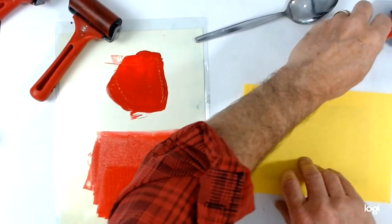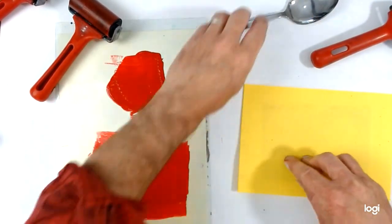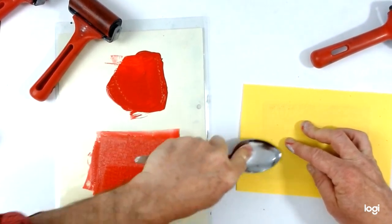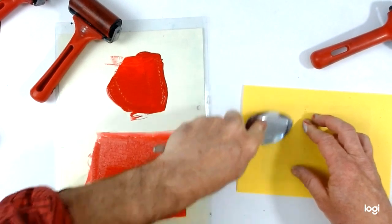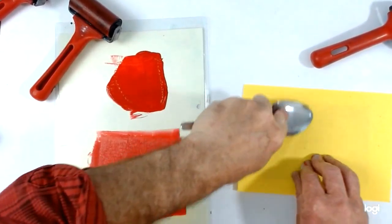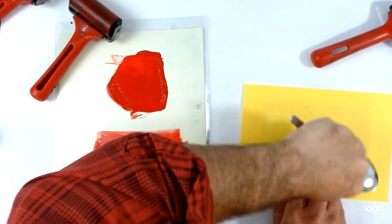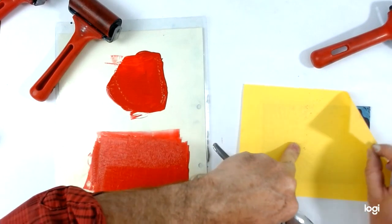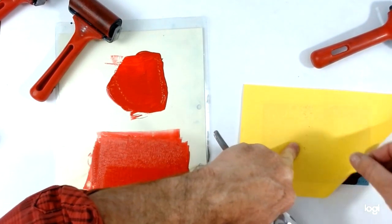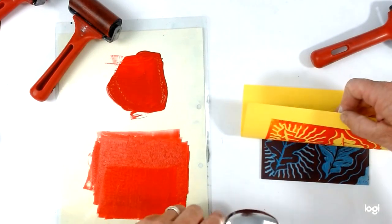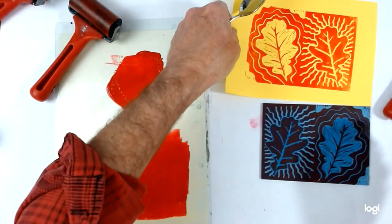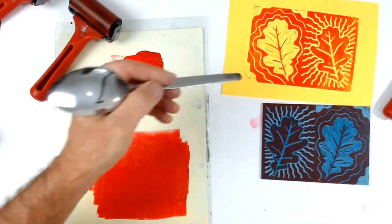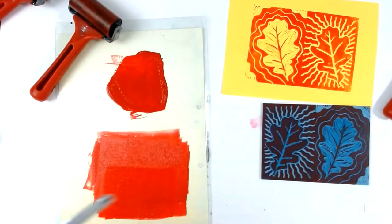And remember that you can peel up from the corners and have a quick look. Oh, I definitely missed a bit there. Just double checking how it's coming out. Remember, if you're peeling up, just hold it down in a different place. That's looking pretty even. So there we have my print. Nice, strong, bold red against that yellow.